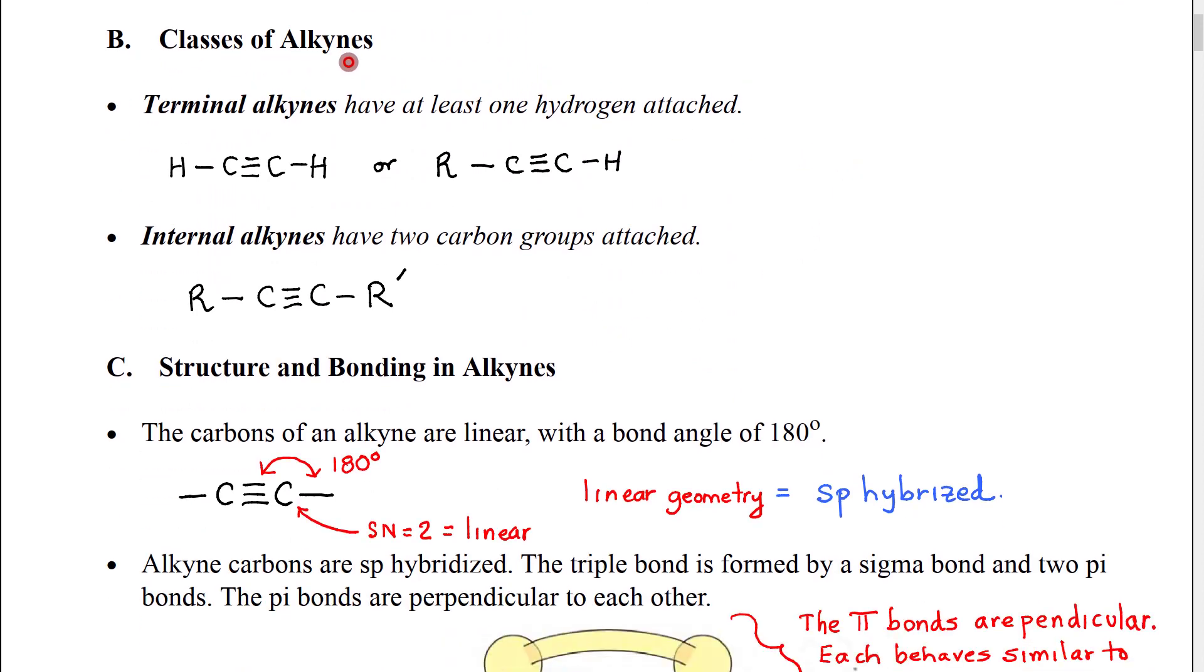We're also going to look at classes of alkynes. There's two important classes of alkynes, two ways that alkynes are sort of categorized. Terminal alkynes have at least one hydrogen attached.